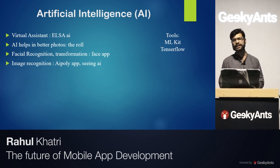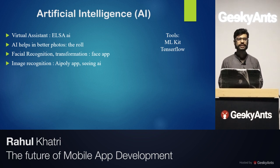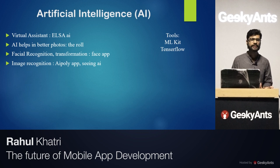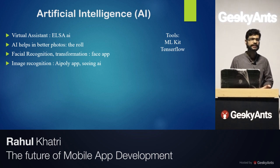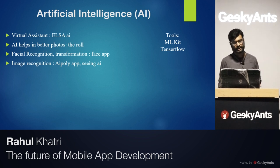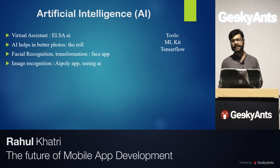With AI, we can also click better images. Our mobiles now have AI-powered cameras that suggest which photos to keep or delete. Apps like the Roll app use AI and machine learning algorithms to suggest which photos to keep or discard.